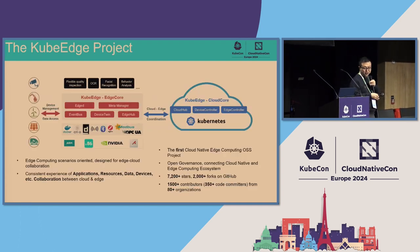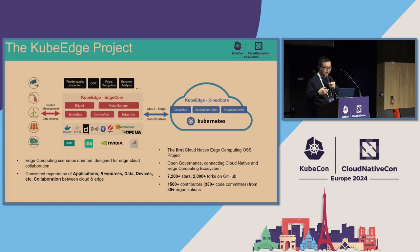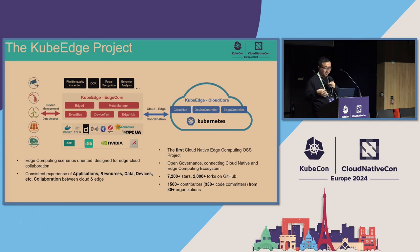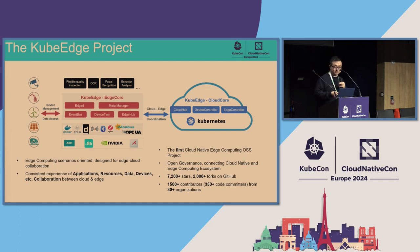Next is the KubeEdge project. KubeEdge is open-sourced on GitHub. We are the first cloud-native edge computing open-source project. We have open governance and are connecting the cloud-native edge computing ecosystem. We have many stars and forks on GitHub, and many contributors from several organizations.